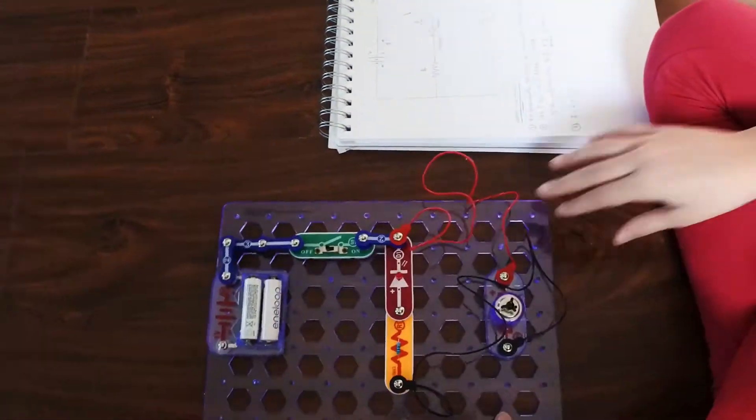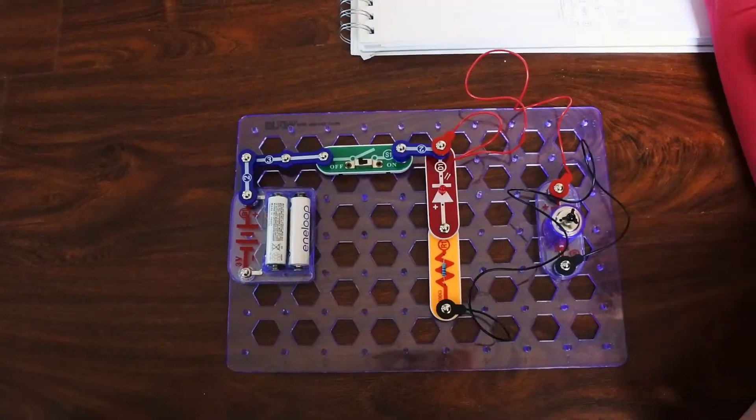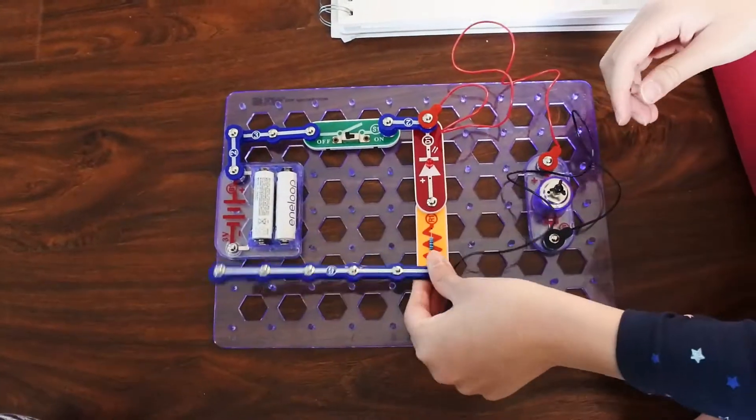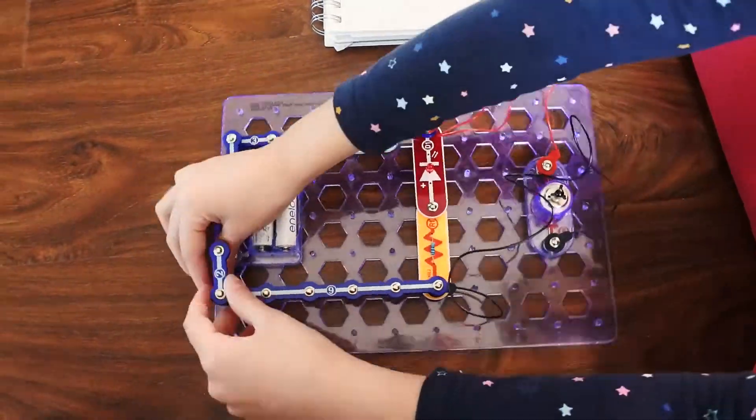We will be making two circuits parallelly connected. One will have an LED connected to the power source and a switch. The second will have the motor with a fan on it. Let's wait for her to complete.